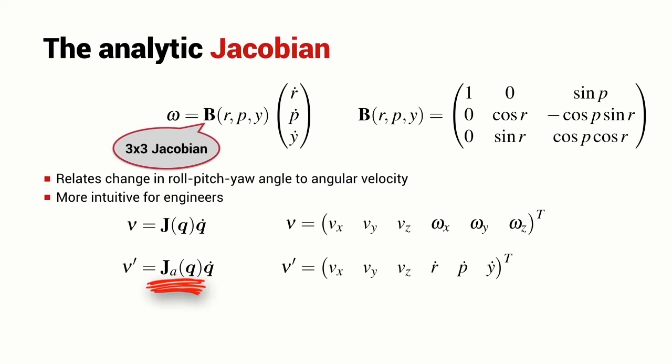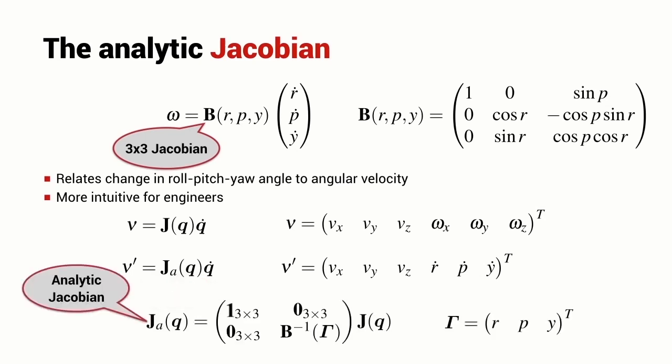Call it J_A, and that is the analytic Jacobian matrix, and it relates the change in robot joint angles to spatial velocity defined now with roll, pitch, and yaw angle rates. To obtain this analytic Jacobian, we start with the standard robot manipulator Jacobian matrix and we pre-multiply it by this matrix.